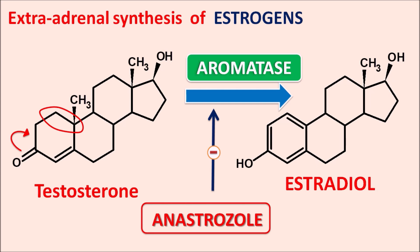In estradiol, two OH groups are present, hence the suffix 'diol'. One OH group is obtained through keto-enol tautomerism, but another OH group is already present in testosterone. In androstenedione there is a ketone at the 17th position, whereas testosterone has an OH group at the 17th position. So androstenedione gives estrone, but testosterone gives estradiol. In this way, estrogens are synthesized from adrenal hormones, and this synthesis is blocked by anastrozole, thereby reducing metastatic breast cancer advancement.